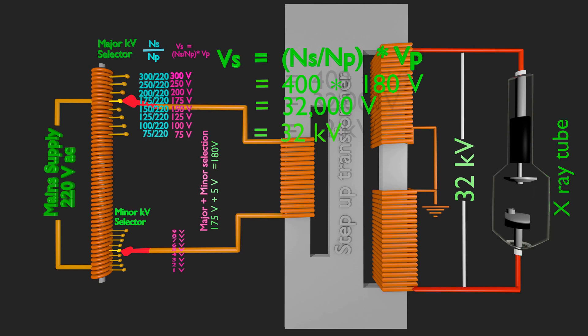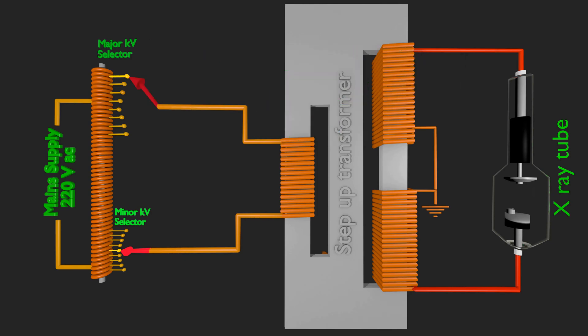So, with an auto transformer and step-up transformer, we increased our 220 volt supply to 32 kV. If radiograph needs a kV of 122, we need to select major and minor selector so that we get a voltage of 305 volt at secondary of auto transformer. The step-up transformer will increase the voltage 400 times, that is 305 volt multiplied by 400 equals 122 kV.